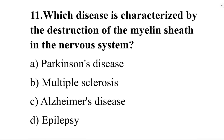Which disease is characterized by destruction of the myelin sheath in the nervous system? Option A: Parkinson's disease. Option B: multiple sclerosis. Option C: Alzheimer's disease. Option D: epilepsy. The answer is option B, multiple sclerosis.